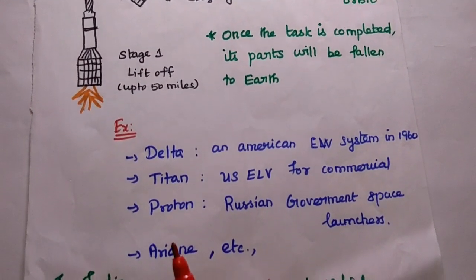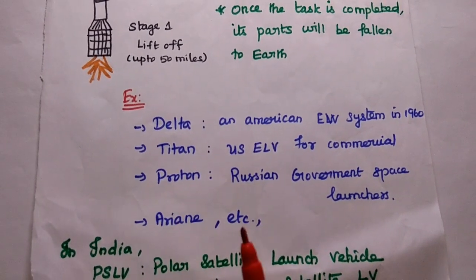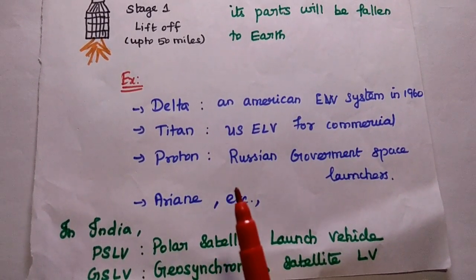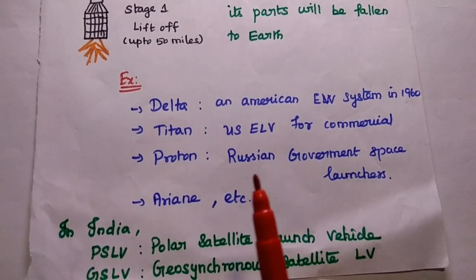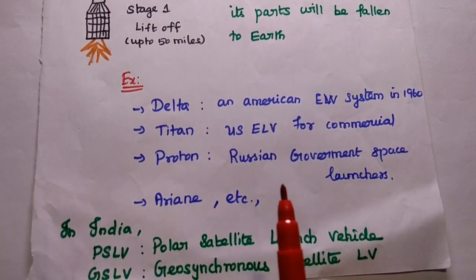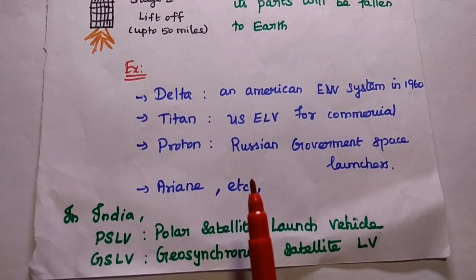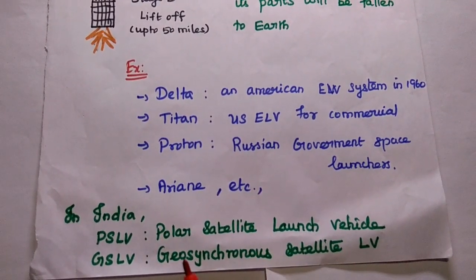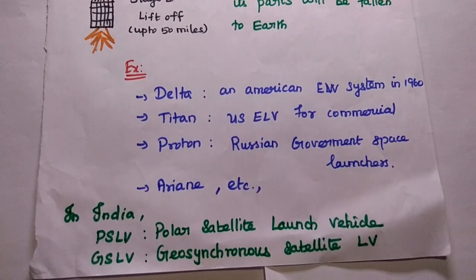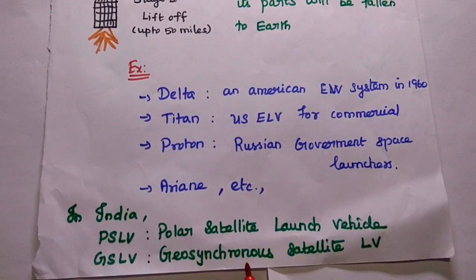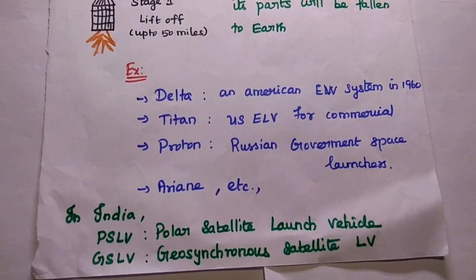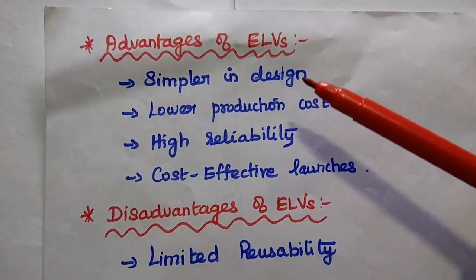The ELV is a single-use launch vehicle. Few examples include Delta, which is an American ELV system from the 1960s; Titan; Proton, which is a Russian government space launcher; and Ariane. In India, we use two kinds of ELVs: PSLV (Polar Satellite Launch Vehicle) and GSLV (Geosynchronous Satellite Launch Vehicle).